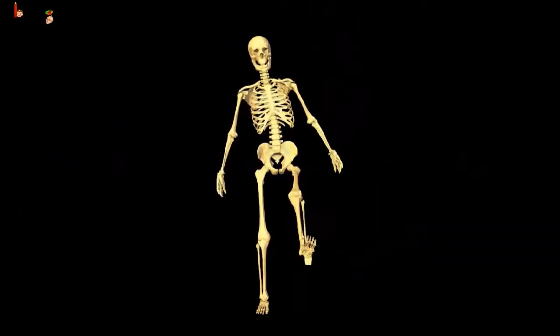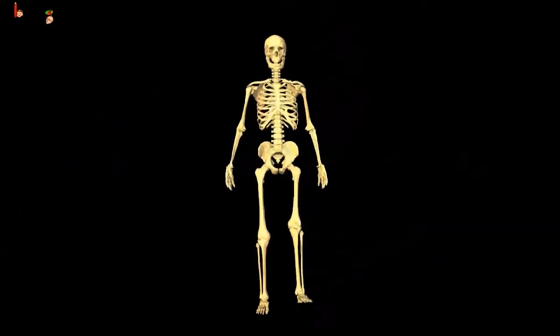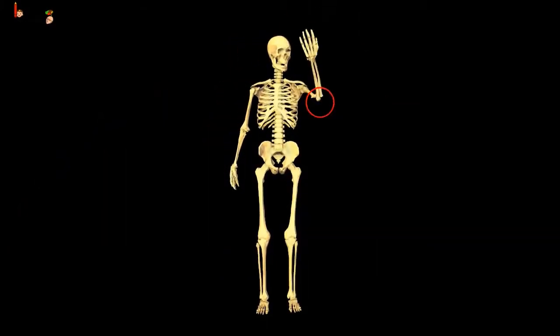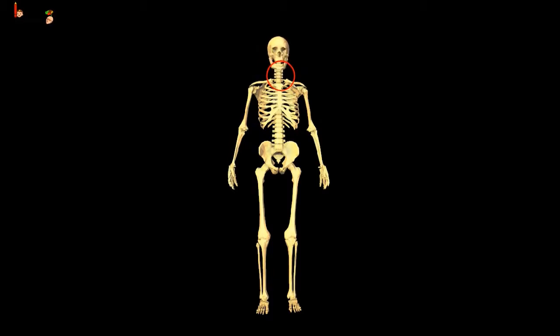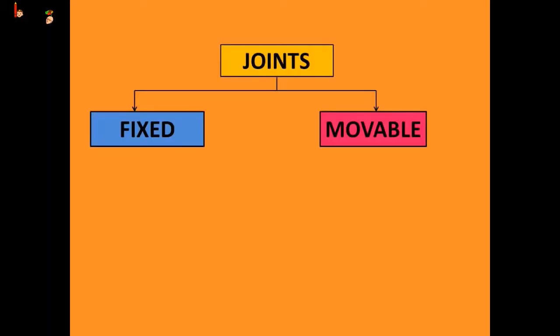The place where two or more bones are joined together is called a joint. We can bend our body around the joints. There are two kinds of joints: the fixed joint and the movable joint.